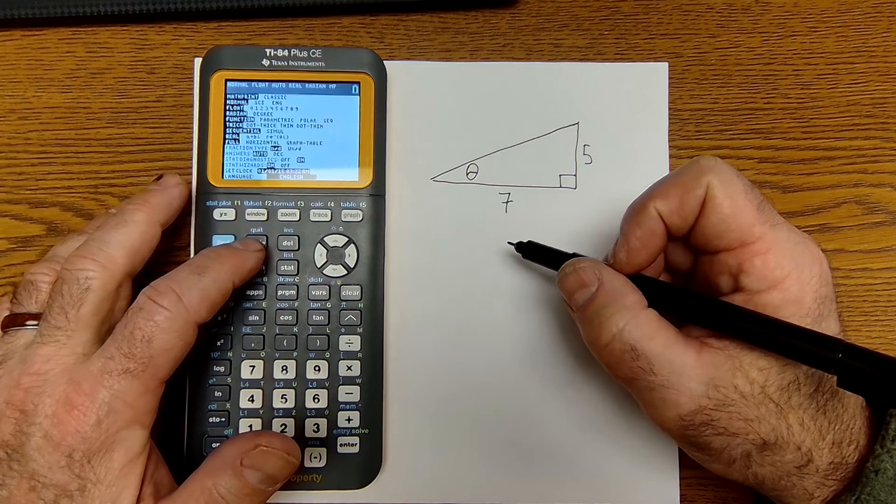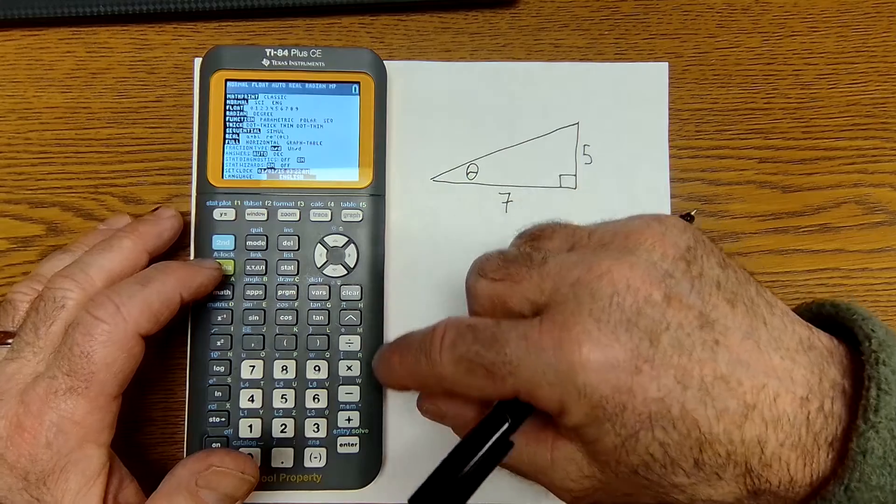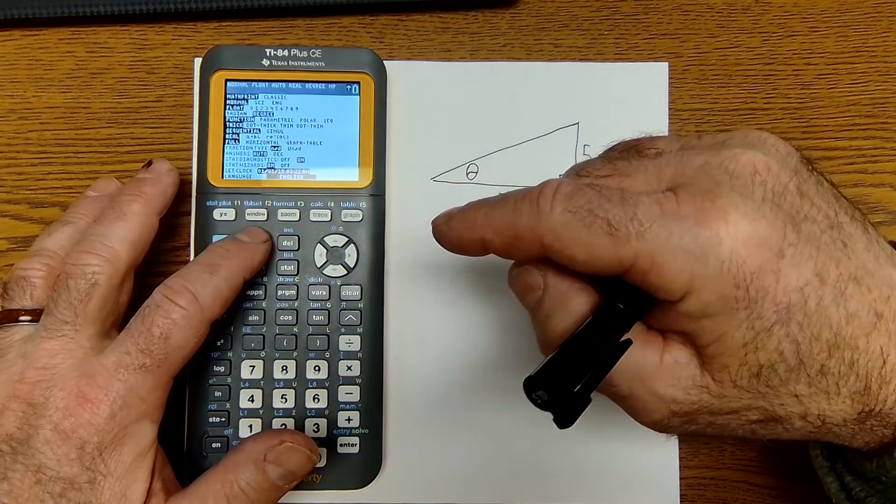First thing you have to do is go to mode on your calculator. Make sure you are in degree mode. So I'm going to hit degree, enter, and then quit.